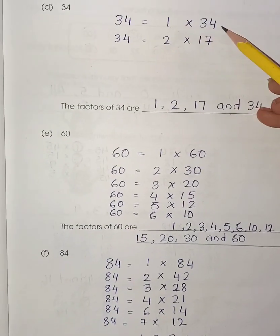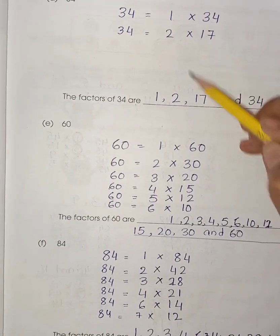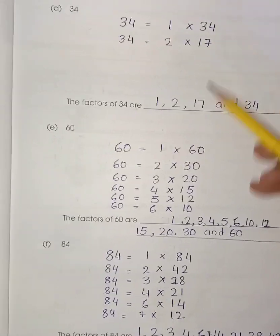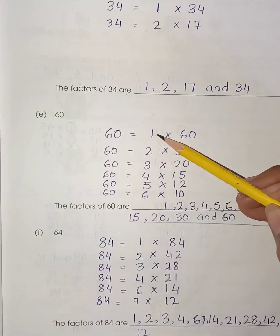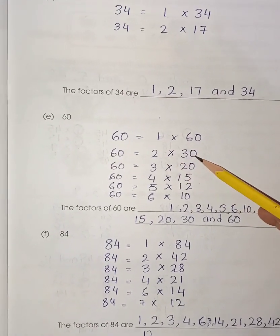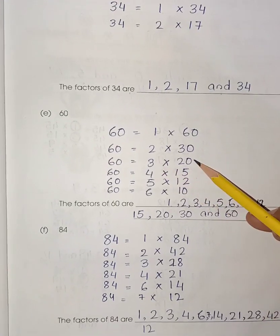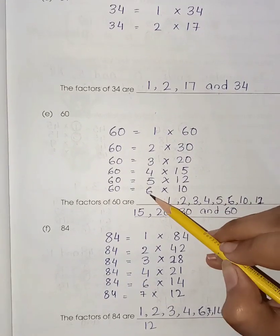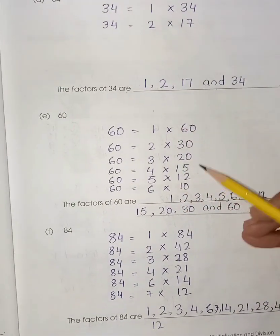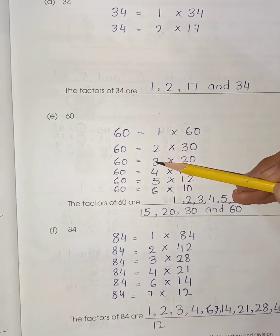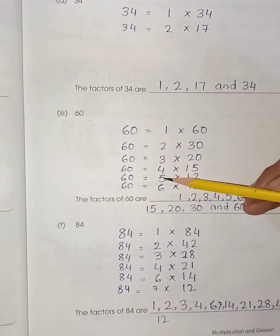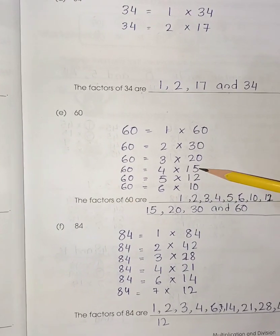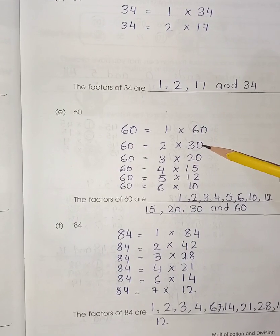For 34, 1 multiplied by 34 and 2 multiplied by 17 is also 34. So the factors are 1, 2, 17, 34. For 60: 1 multiplied by 60, 2 multiplied by 30, 3 multiplied by 20, 4 multiplied by 15, 5 multiplied by 12, 6 multiplied by 10. So the factors are 1, 2, 3, 4, 5, 6, 10, 12, 15, 20, 30 and 60.